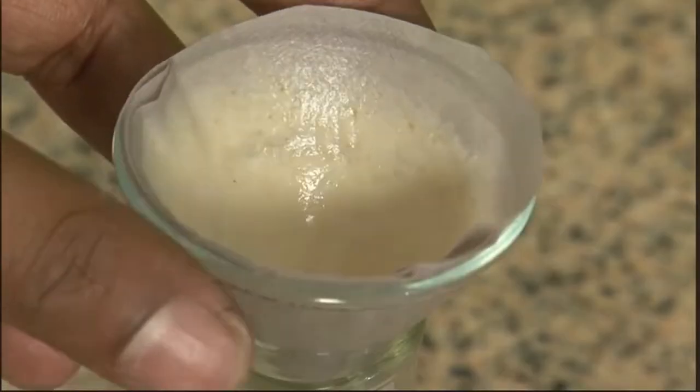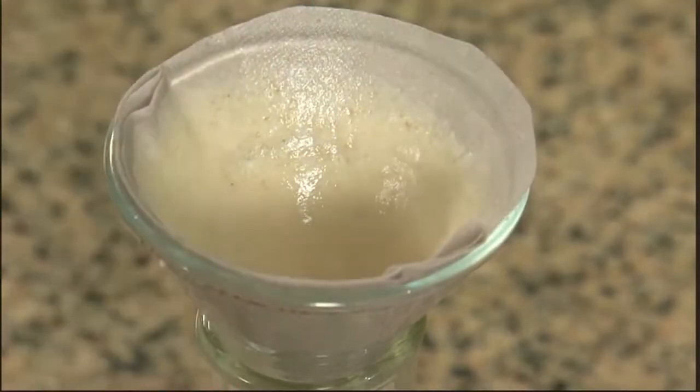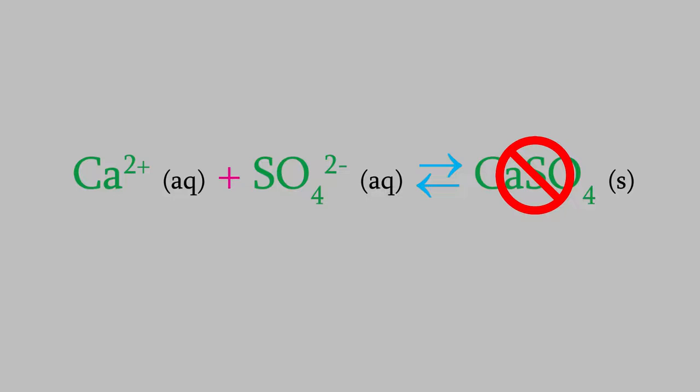When we do that, that means we've removed calcium sulfate from the reaction. So Le Chatelier's Principle tells us the reaction will shift to the right in order to get back to equilibrium.